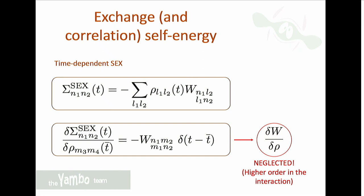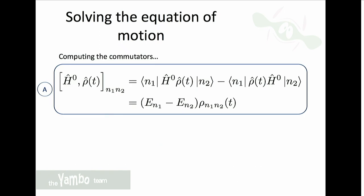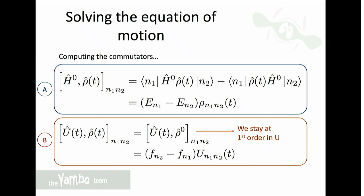Going back to the equation of motion with these simplifications, we have three commutators to calculate, and W minus 2V appears. For the first part we let the Hamiltonian act on the eigenstates, obtaining the difference of energies. For the second commutator we replace the time-dependent density matrix with the equilibrium one because we want to stay at first order in the external interaction; the equilibrium density matrix applied to the eigenstates just gives a difference of occupation factors.